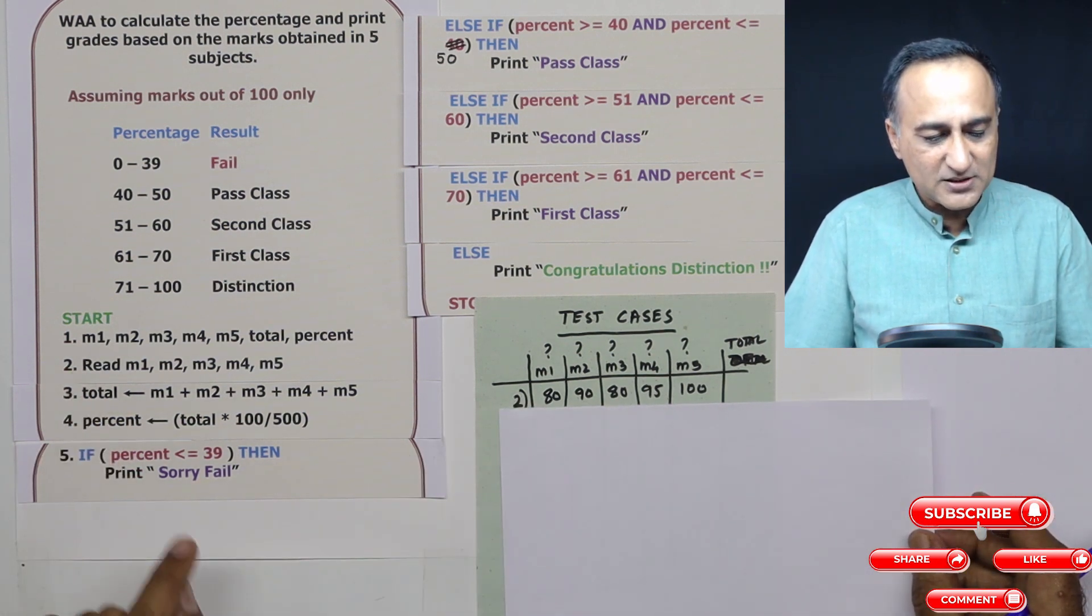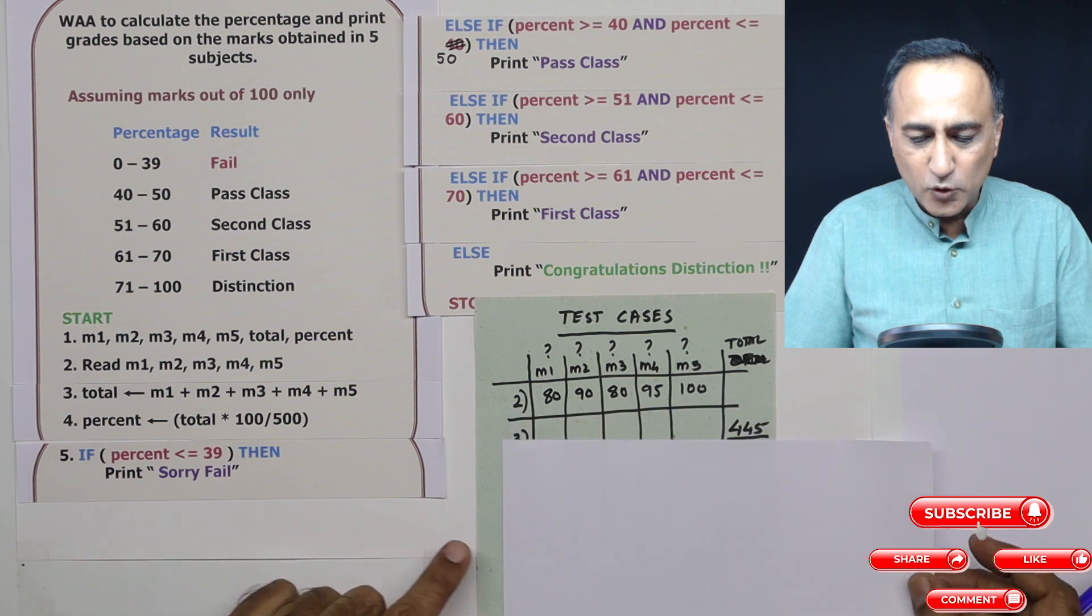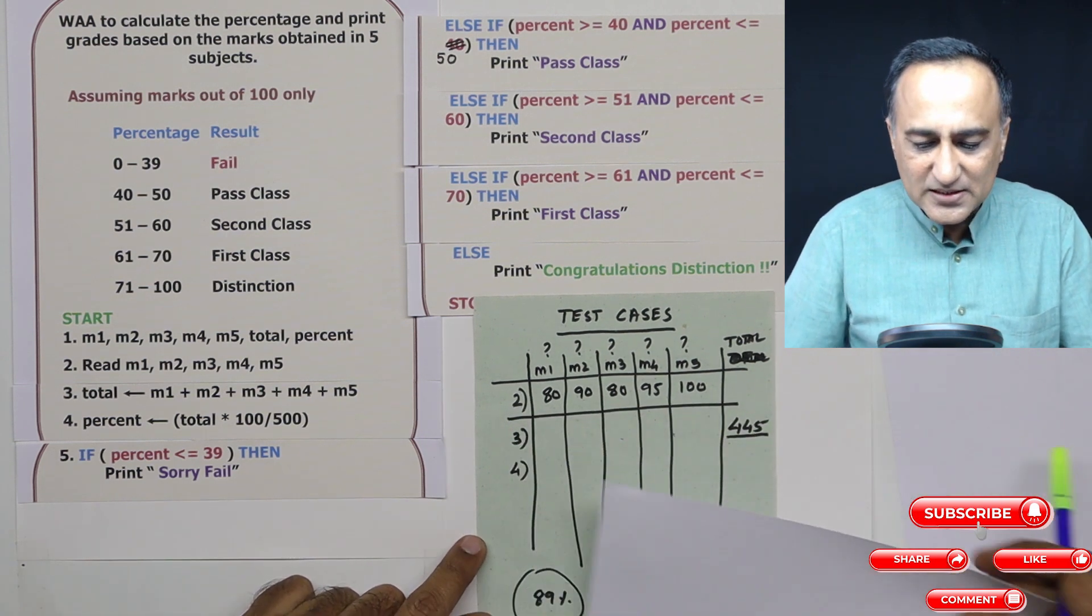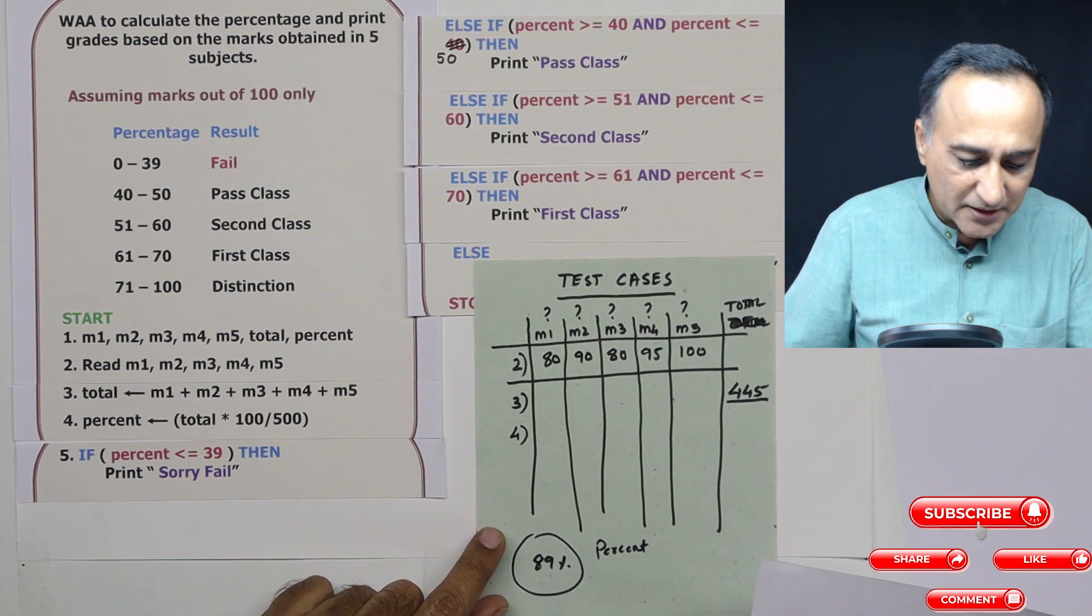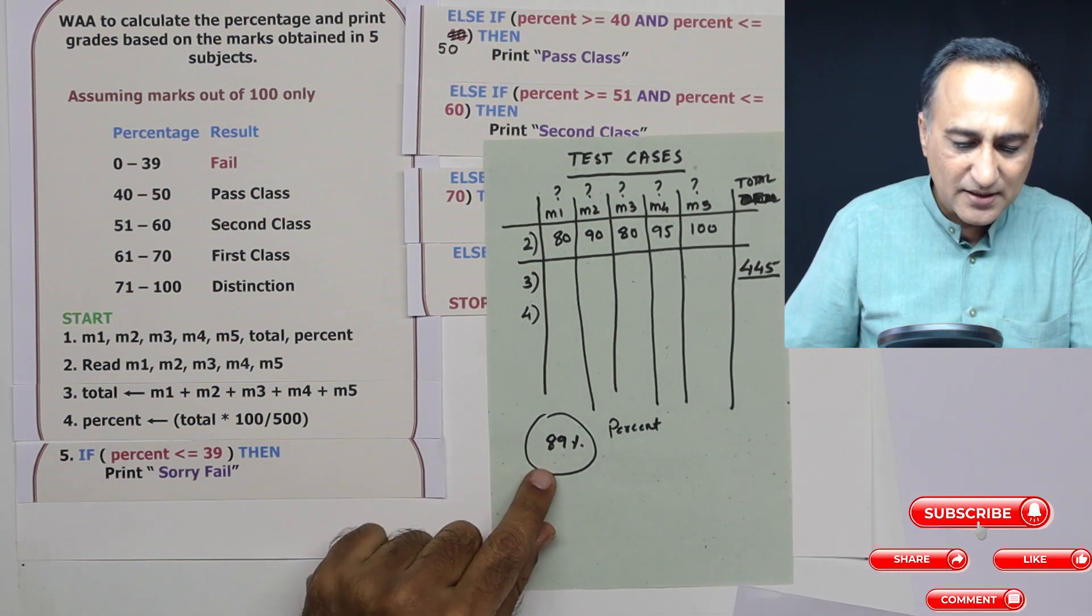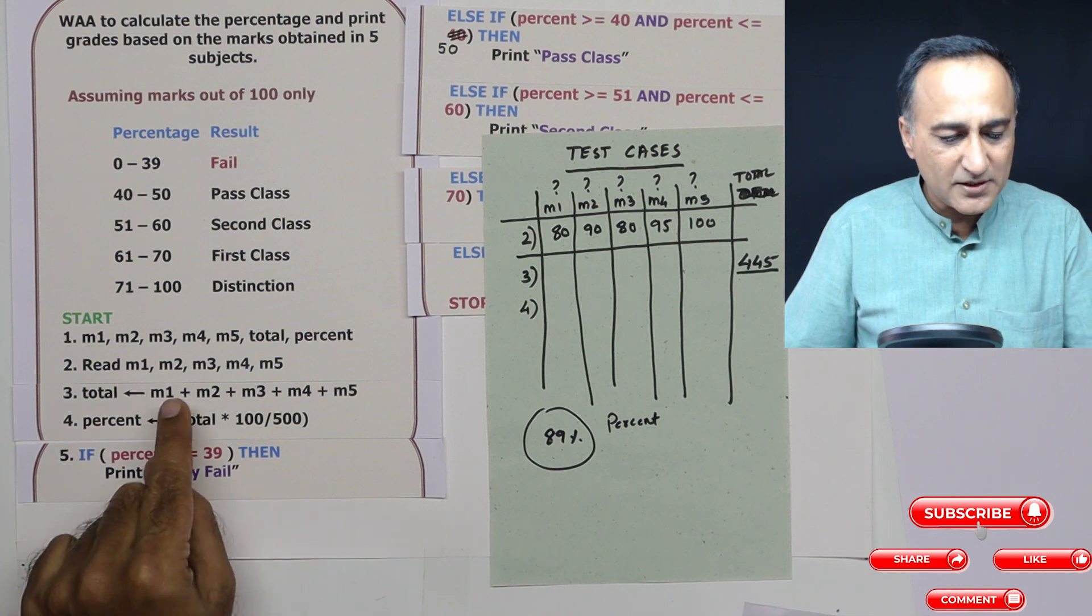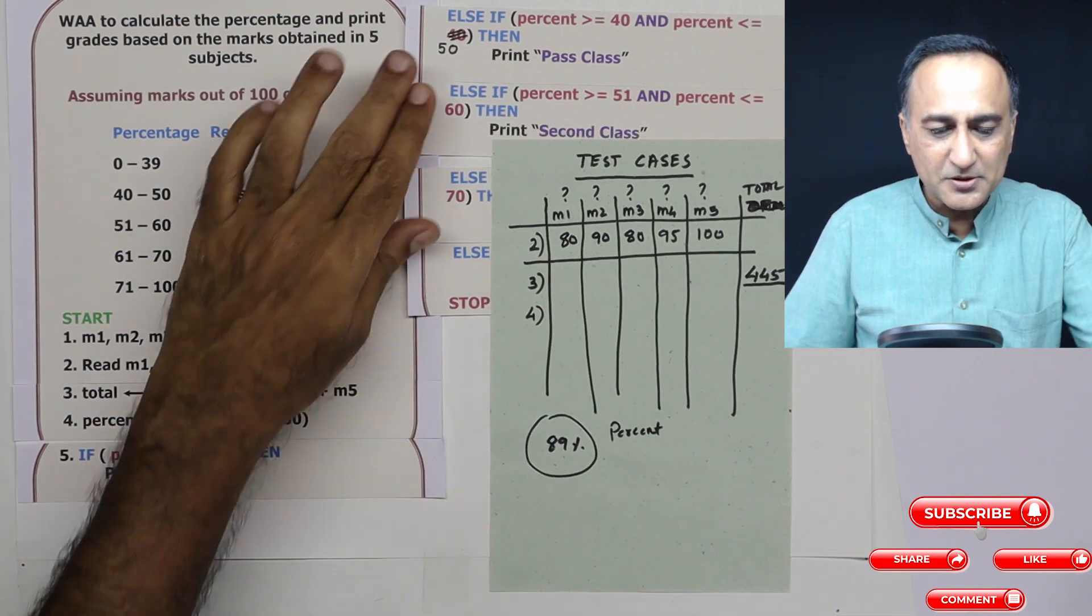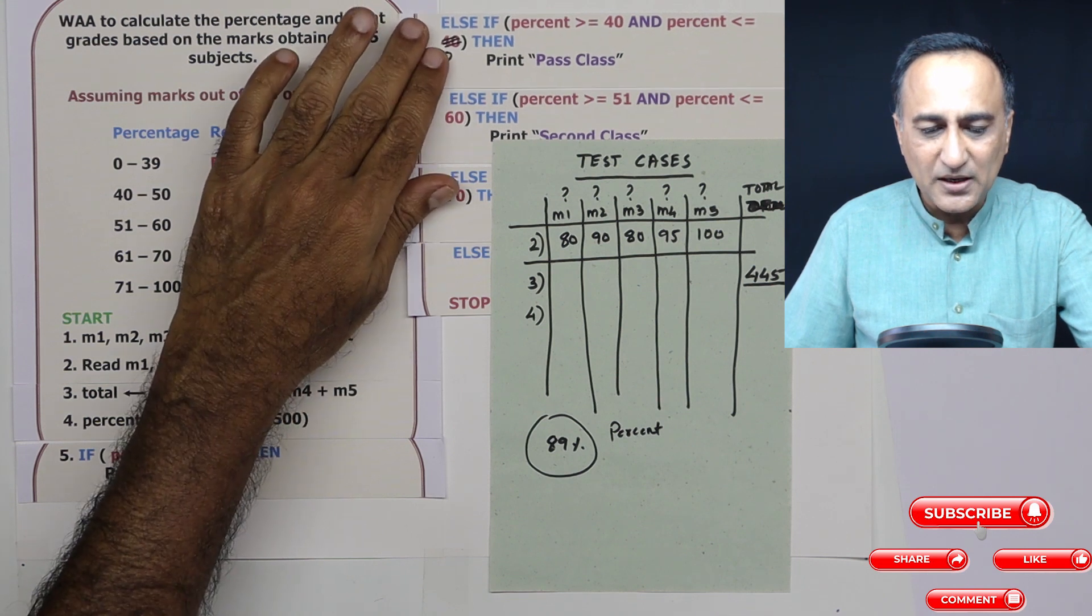Step number three, total is going to come as 445. And in the next step, I'm going to calculate the percentage. Percentage here is coming as 89% for all these five subjects. Once I know it's 89%, then it is quite a simple task.